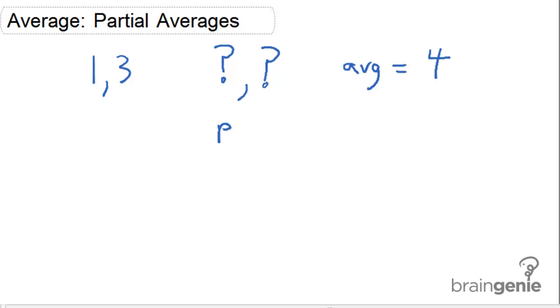How would we be able to figure out the average of the second set of numbers, or the partial average here?